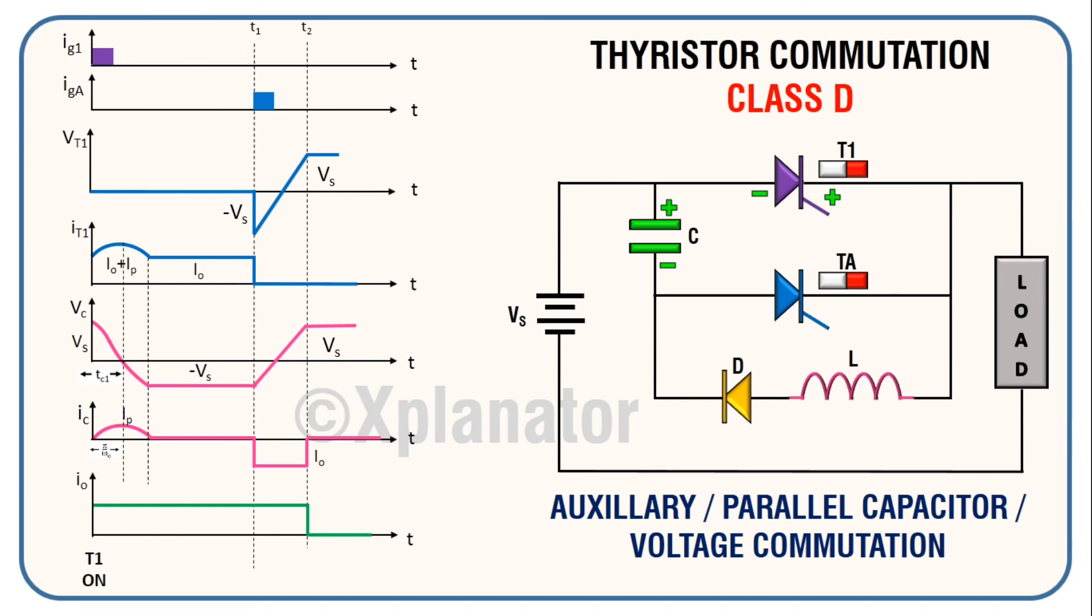The load current falls to zero when TA is turned on to turn off T1. At T equals T1, TA is on and T1 is off. And at T equals T2, TA is off.